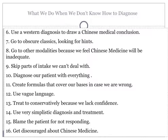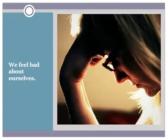Number eleven: create formulas that cover our bases in case we're wrong. Number twelve: use vague language. Number thirteen: treat conservatively because we lack confidence. Number fourteen: very simplistic diagnosis and treatment. Number fifteen: blame the patient for not responding. Number sixteen: get discouraged about Chinese medicine. The final thing that happens when we don't know how to diagnose is that we feel really badly about ourselves — and that's probably the worst. It can be very depressing. We've put so much into our educations and so much hope into this way of making a living, and to have bad results and confusing diagnoses can really make us feel terrible.